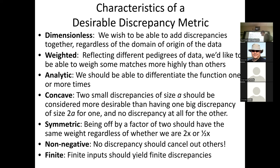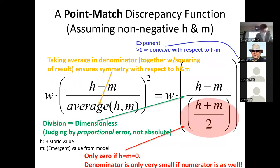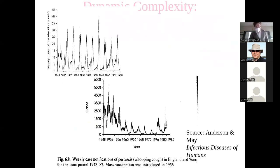This mechanism was designed for matching at a given time point—what the model produces versus the historic empirical value. But for ABMs, we often don't want to match point-wise in time. When we look at historic time series—even those with marked regularity like pertussis notifications in England and Wales in the pre-vaccination era—there's a lot of structure and orderliness, but it's not totally deterministic or perfectly periodic like a sine wave. It has structure, but there are stochastics in it.